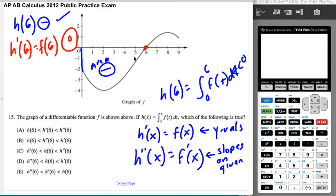And the slope at 6, h''(6), which is the same as the slope, is positive.